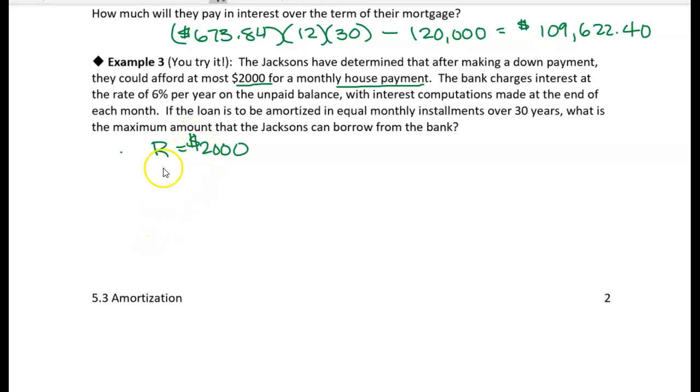The bank charges 6% per year in interest, and they want to take out a 30-year mortgage. So they're going to take out a loan that will be amortized in equal monthly installments over 30 years. And so we want to know how much house can they afford? How much should they borrow?